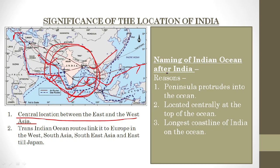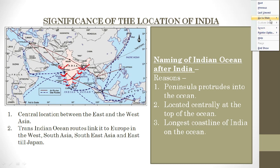India has been connected to different countries for trade, international businesses, and commerce through all these maritime routes. Trans-Indian Ocean routes link India to Europe in the west, and to South Asia, Southeast Asia, and East Asia all the way to Japan in the east. The most significant aspect is that this has provided very important maritime route relations for India.